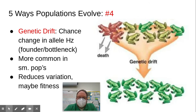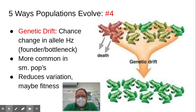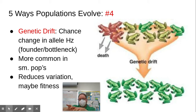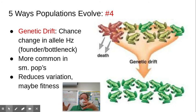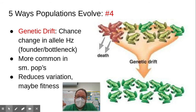Drift is another way populations can change. Drift is chance change in allele frequency. What happens is you have some sort of event — whether individuals in a founding group split off or you have some cataclysmic event — and the small group that remains may have allele frequencies different from the larger group. Because it happens by chance, it's not necessarily adaptive.